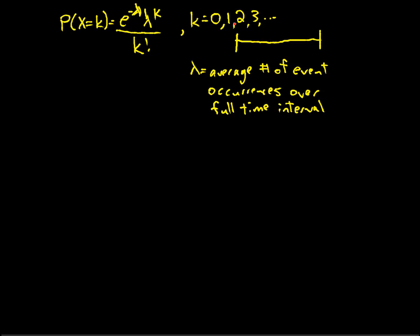So lambda equals average number of event occurrences over this full time interval. To analyze this, I'm going to think of having my time interval and cutting it up into a bunch of little subintervals. I'm going to cut it up into n subintervals.